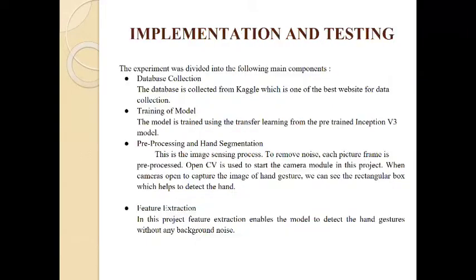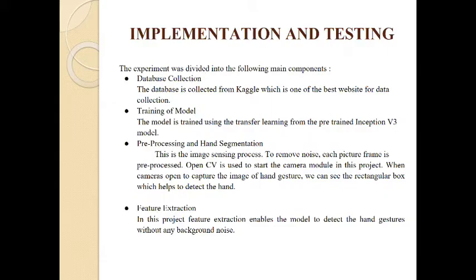Moving forward to our implementation part, we have divided our work into five major steps. The first is database collection — we collected our dataset from the Kaggle website, using about 3,000 images per alphabet. This wide variety of data was very helpful in increasing the efficiency of our model. After that comes the training of the model. We used Inception V3, which is a pre-trained model, and the technique we used was transfer learning. Through transfer learning, we use a pre-trained model and train it to our specific requirements to achieve better accuracy.